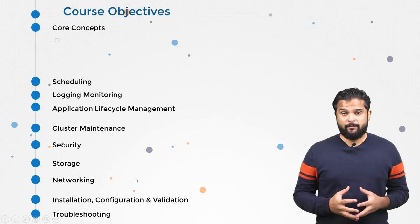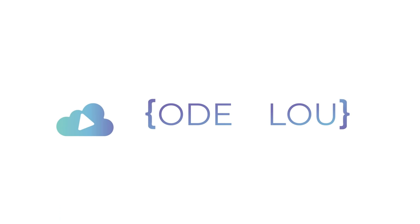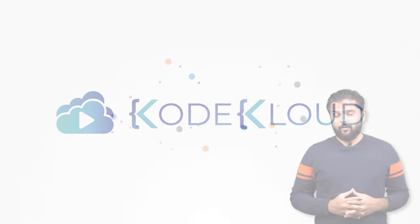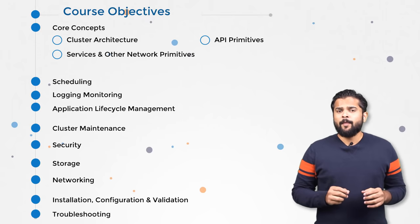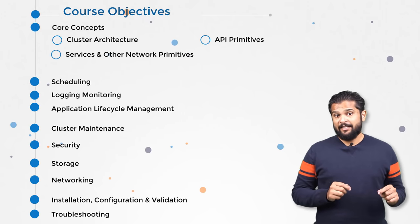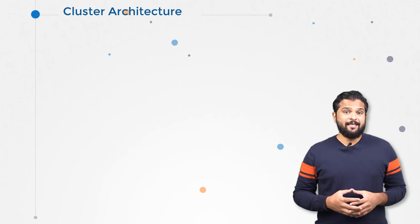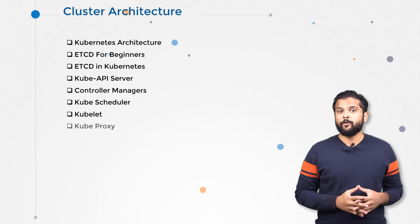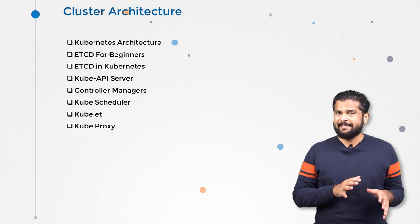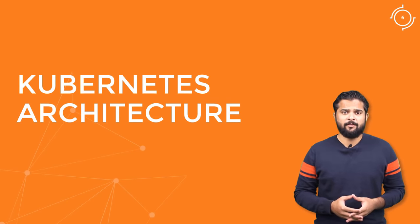Hello and welcome to this section. My name is Mumshad Manambat and we are going through the Certified Kubernetes Administrators course. We start with a basic overview of the Kubernetes cluster architecture. We first look at the architecture at a high level and then drill down into each of these components, seeing what their roles and responsibilities are and how they are configured. Finally, you go through a practice test where you look at an existing cluster and are asked to identify various details with respect to these components.